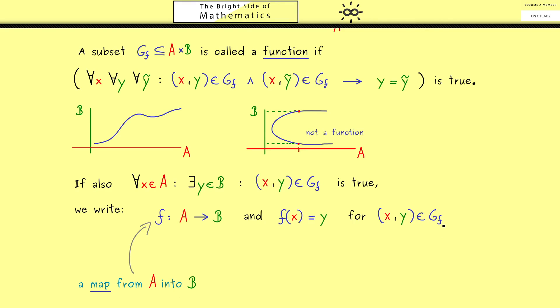And the subset Gf which we started with gets a new name—we call it the graph of f. Now, since the most important ingredients for map f are the two sets A and B, they also get some new names. So the inputs for the function f are elements x from A, so we call the whole set the domain of f.